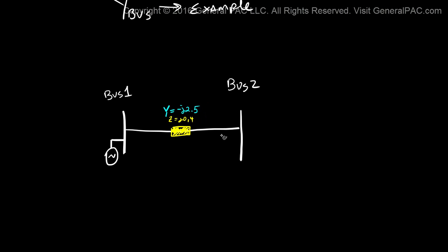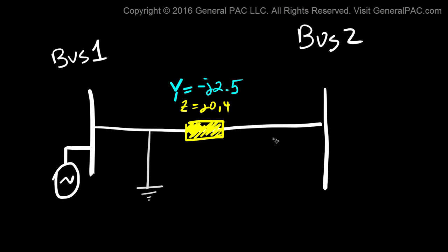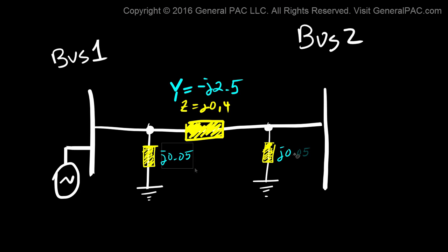Let's say that this transmission line is a medium-length transmission line. A medium-length transmission line also has a term called shunt admittance. Since this is a medium-length line, we have to consider the shunt admittance of this line. There's a shunt admittance at two points — on the left side and the right side. We'll model this shunt admittance with a yellow rectangle, and let's say the value of this shunt admittance is j0.05 on each end.